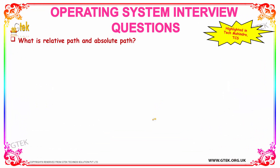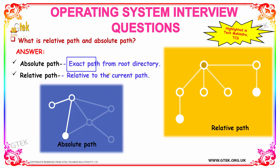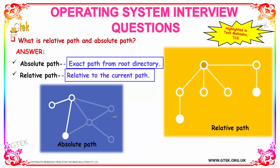What is relative path and absolute path? Absolute path is the exact path from the root directory. Relative path is relative to the current working path. The absolute path gives the exact location from the root directory, while the relative path navigates from the current directory.